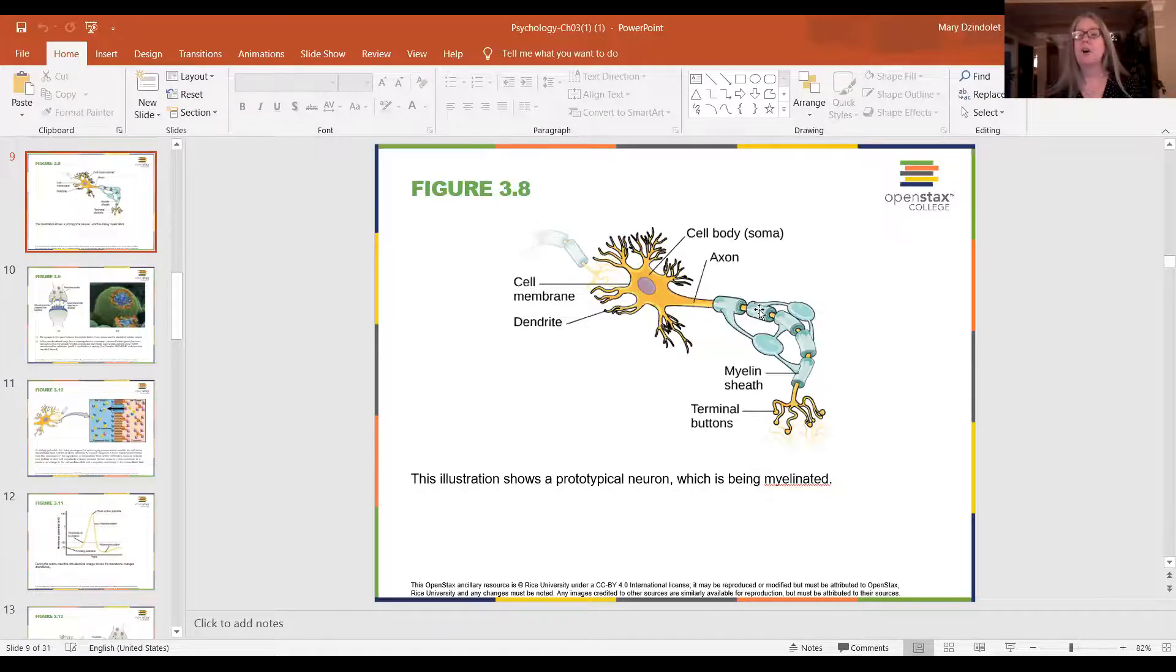On the axon are these things that we call the myelin sheath. They're sort of like bubble wrap. Now not all neurons have the myelin sheath, have the bubble wrap. In fact, the neurons that are in your digestive system do not. But most of our neurons will have this myelin sheath. Healthy neurons are going to have a thick myelin sheath. The thicker the myelin sheath, the faster that neuron can communicate information.